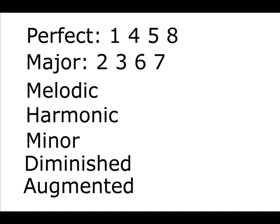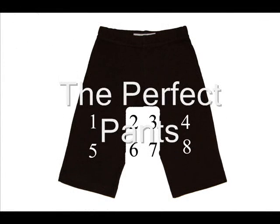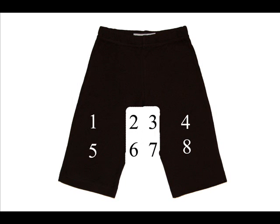A good way to determine if an interval is perfect or major is to refer to the perfect pants diagram. Perfect intervals are located inside the pants — these intervals are found 1, 4, 5, and 8 pitches from the root note. Major intervals are located outside the pants — these intervals are found 2, 3, 6, and 7 pitches from the root note.